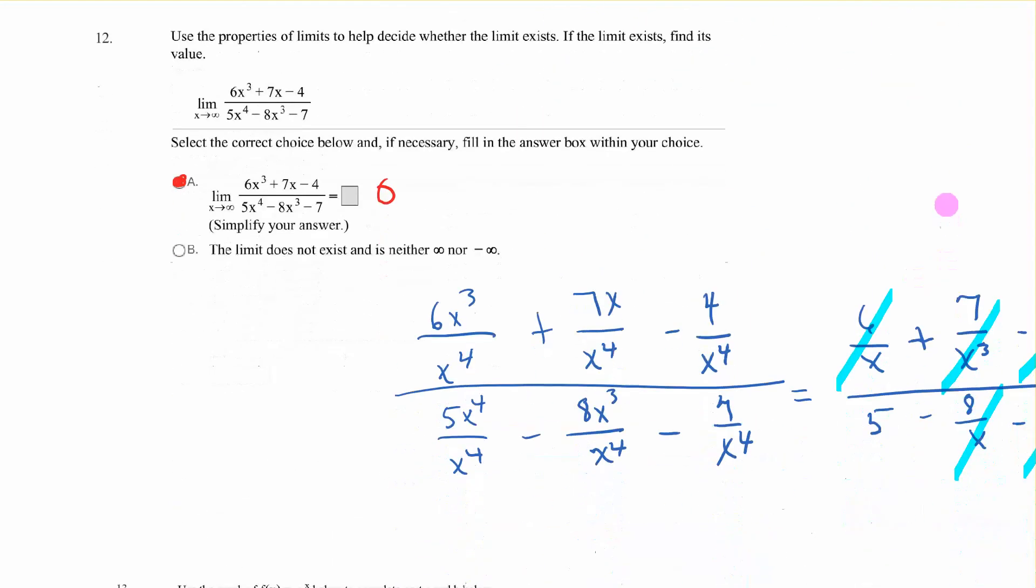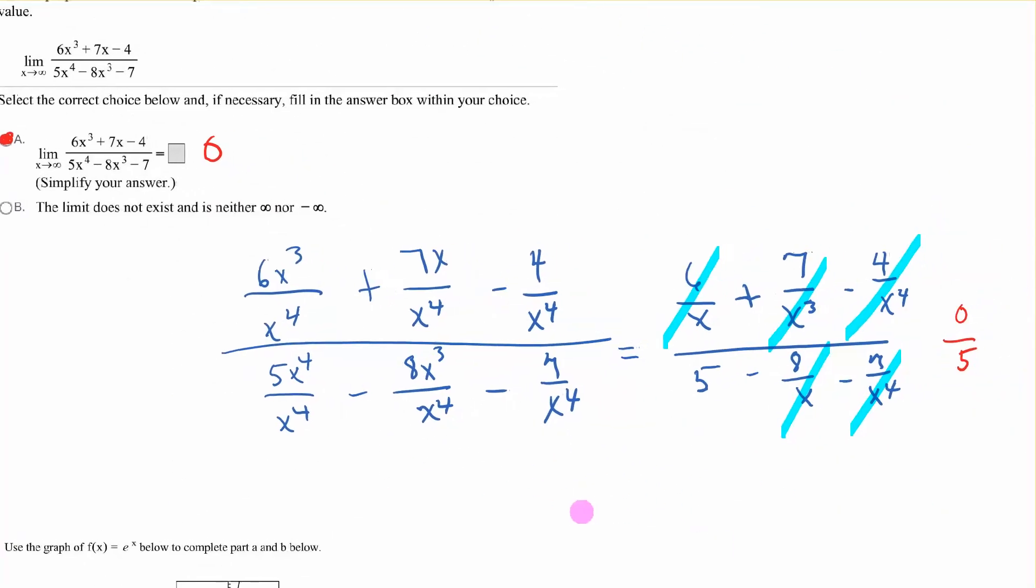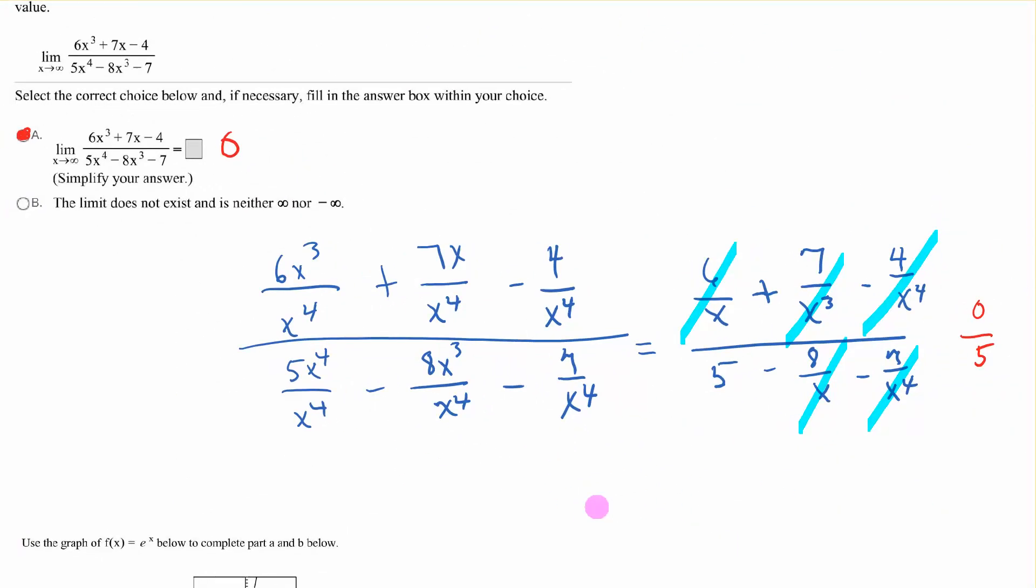Number 12. Same kind of problem. We are dividing by x to the fourth on each of those. We're left with 6 over x plus 7 over x cubed minus 4 over x to the fourth. Every one of those goes to 0. On the bottom, those totally cancel. We're left with 5. And then we have 8 over x and 7 over x to the fourth. Those go to 0. We have 0 over 5, which is 0.